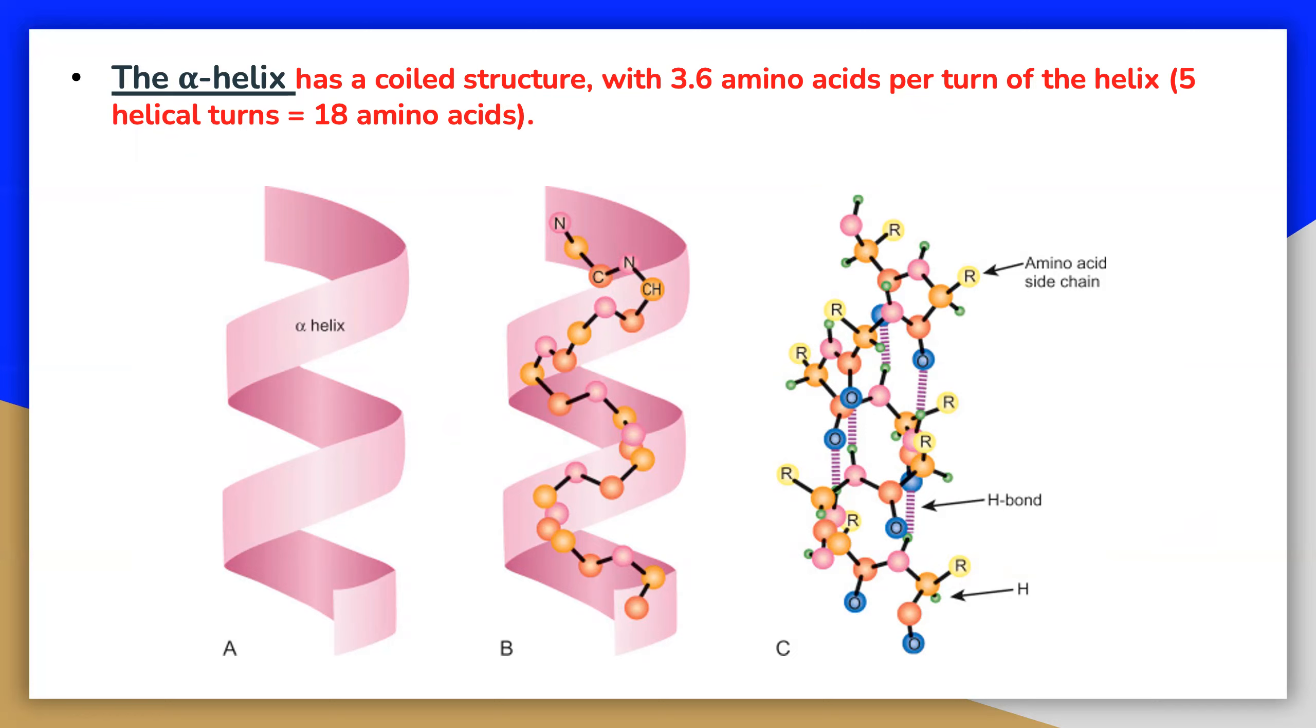In the alpha helix, hydrogen bonds form between carbon to oxygen groups and nitrogen and hydrogen groups in the polypeptide backbone that are four amino acids distant. These hydrogen bonds are the primary forces stabilizing the alpha helix. The stability of an alpha helix is enhanced by the presence of the amino acid aspartate.